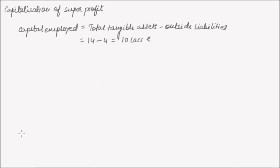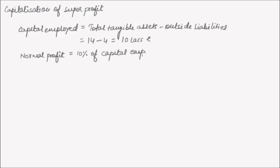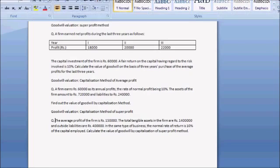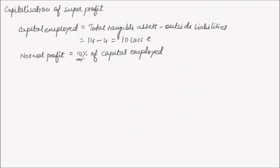Now we calculate the normal profit. The normal rate of return is 10%, as mentioned in the question. So normal profit is 10% of capital employed — that is, 10% of Rs. 10 lakhs — which amounts to Rs. 1 lakh.